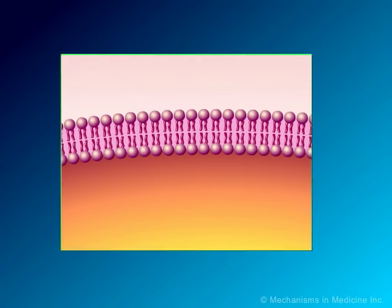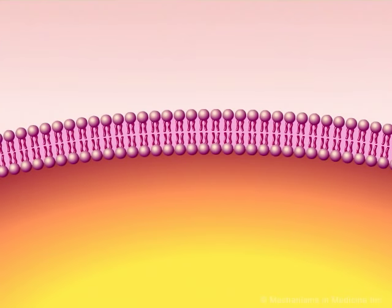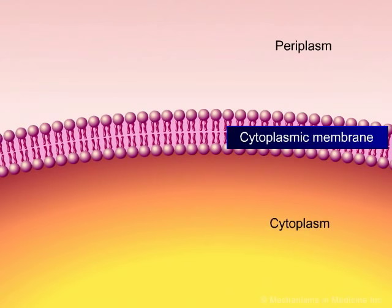In gram-negative bacteria, the gap between the cell membrane and the cell wall is known as the periplasmic space. Most gram-positive bacteria do not possess a periplasmic space but have only periplasm where metabolic digestion occurs and new cell peptidoglycan is attached.